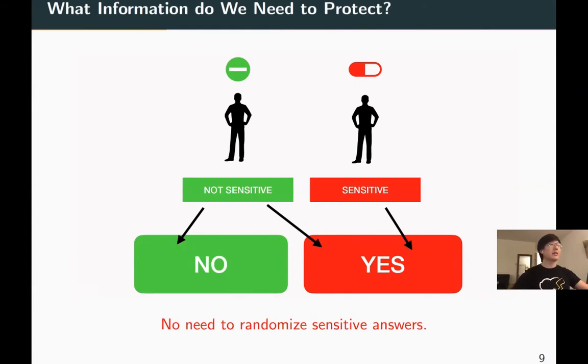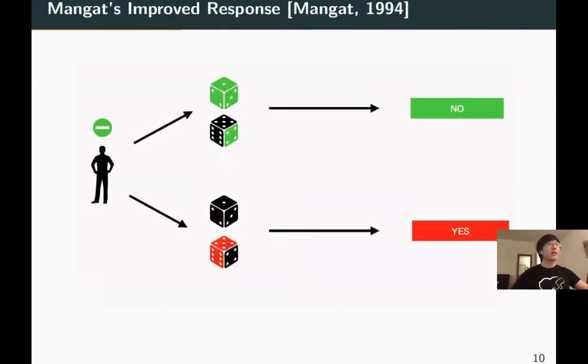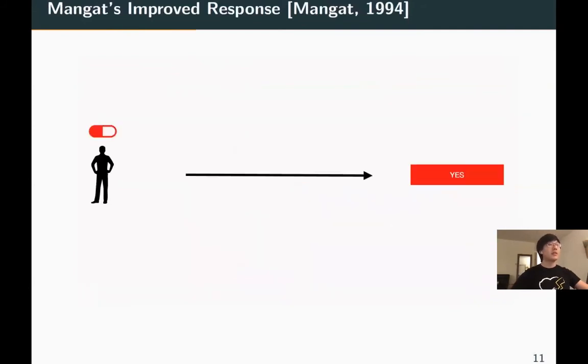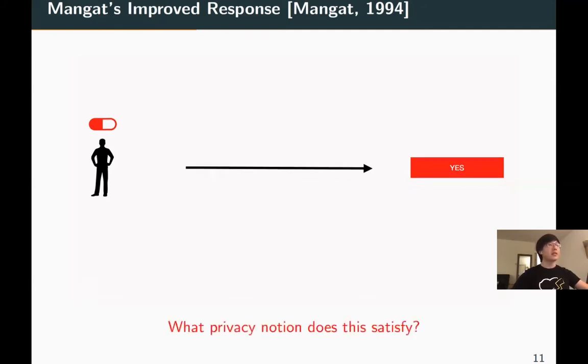This scheme is called Manga's improved response. If a user has not done drugs, they do the same as randomized response, but if the answer is yes, they can directly output yes deterministically. Intuitively this should lead to better utility, since we are randomizing fewer answers, and this should protect reasonable privacy. But the question is, what privacy notion does this satisfy?